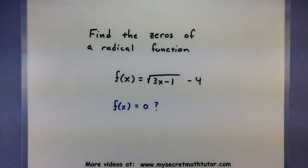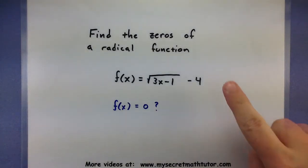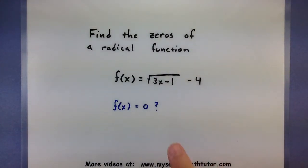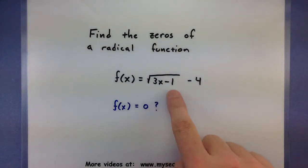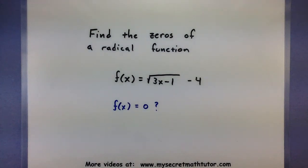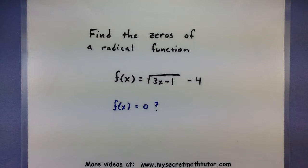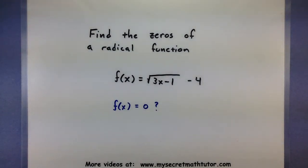Hello and welcome to MySecretMathTutor. For this video we're going to find the zeros of a radical function. When you hear the word zeros of a function, remember we really just want to know where does this function equal zero. Since we're dealing with radicals, all we have to do is take the radical part of the equation, set it equal to zero, and solve it. Let's look at two examples and see this process in action.